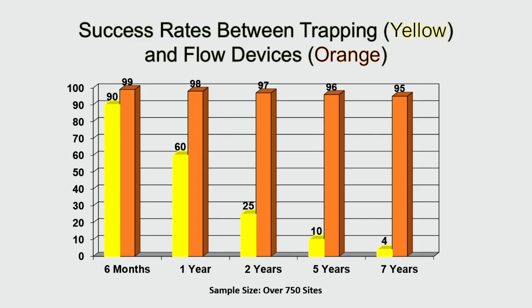Normally, highway departments in particular — who we work with most, because beavers plug culverts so much — like to automatically hire trappers to solve their beaver problem at the culvert. The issue is, once you trap beavers, they tend to come back again and again. It's a short-term and expensive solution, not only for the price of constantly hiring trappers, but also because highway departments often damage the culvert when clearing it, affecting water drainage.